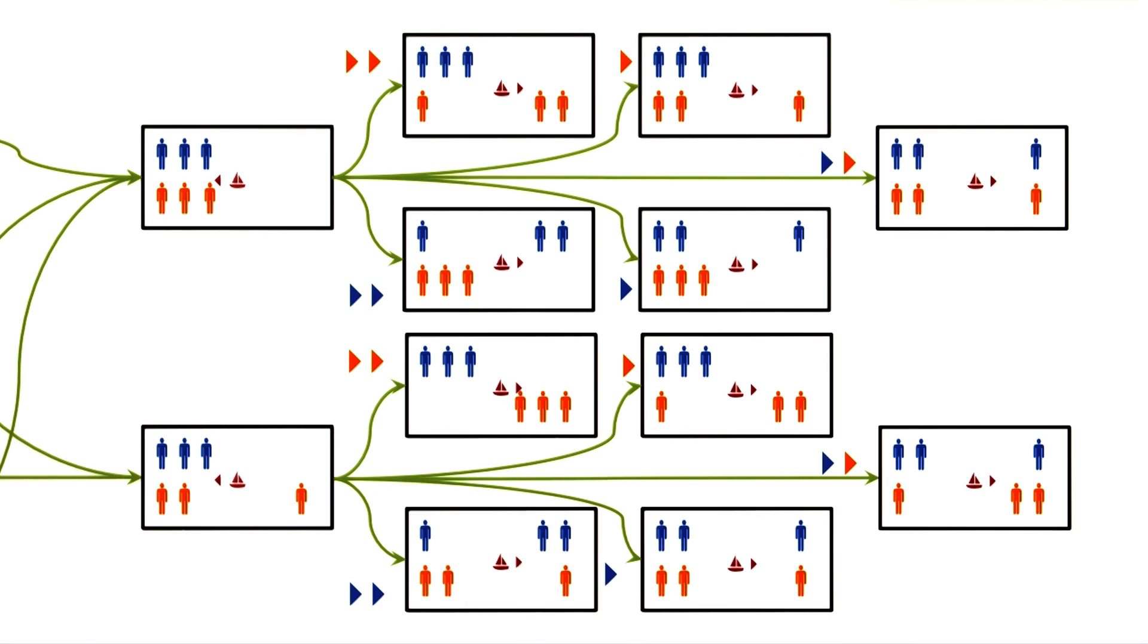This is the problem of combinatorial explosion, where one starts with a small number of states, but the number of successor states keeps on increasing very rapidly.